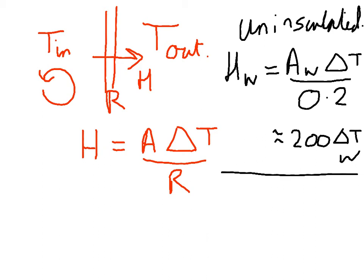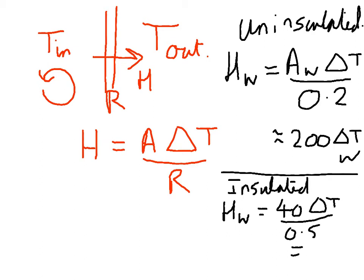If we insulate the windows, that changes to 0.5, so insulated. And also some area, which is 40 delta T over 0.5 equals 80 delta T watts.